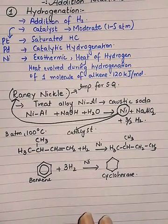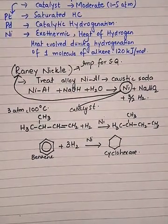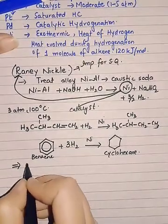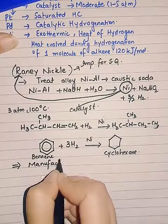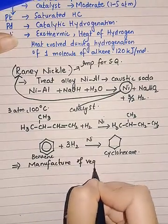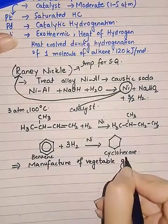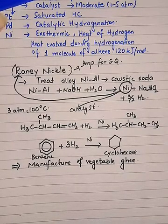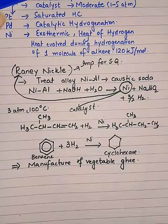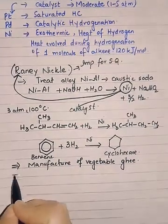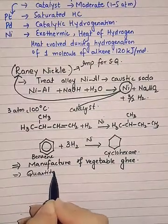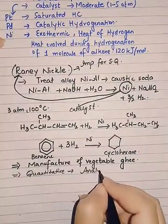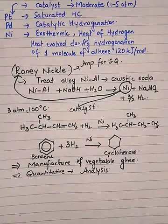What is the importance of catalytic hydrogenation? It is important in the laboratory as well as in industry, and it is used in the preparation of vegetable ghee. It is also a synthetic method in the laboratory as well as an analytical tool, since the reaction is generally quantitative, so it is used for analysis. This is all about hydrogenation, the first reaction of alkenes.